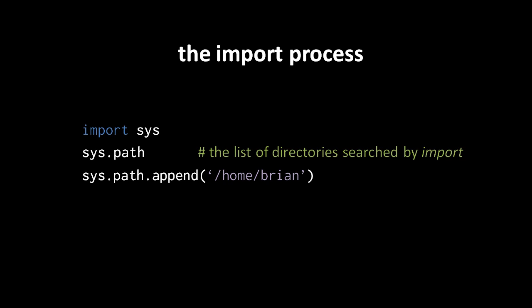You can actually modify this list, and if you do, that will affect any future imports. So here we import the sys module and we're appending a directory path /home/brian to the end of sys.path. In subsequent imports, Python will look in that directory to find modules, though since it's appended to the end of the list, it's the directory which will be searched last.